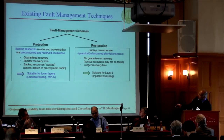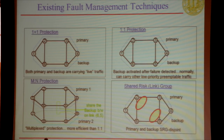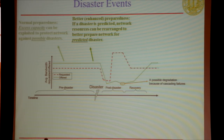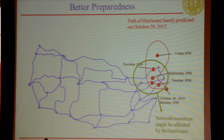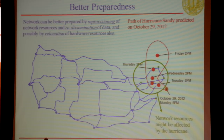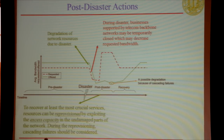Traditional methods for fault management are well-practiced in our networks. When a disaster occurs, we need better or enhanced preparedness. If a disaster is predicted, network resources can be rearranged to better prepare for the predicted event — this is reprovisioning. Better preparedness could include reprovisioning of resources and redistribution of data, moving data to safer areas, and potentially relocating hardware resources. Post-disaster, reprovisioning using excess capacity helps recover crucial services.